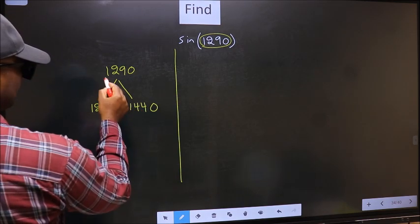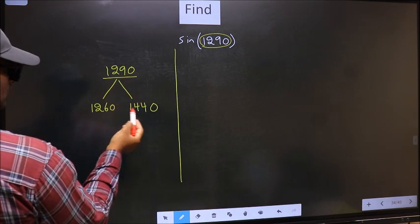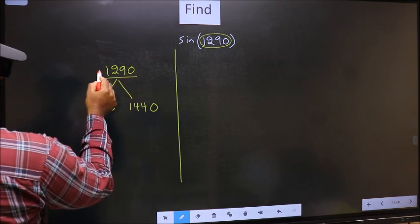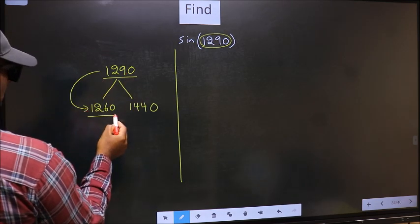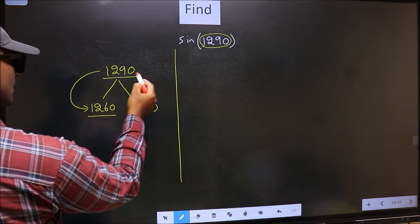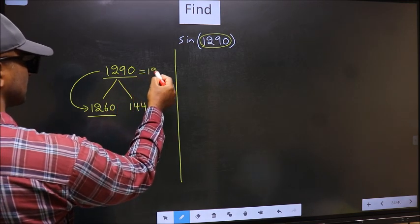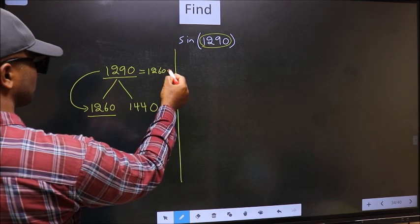Next. Now 1290 is close to which number? This is close to 1260. So 1290 now should be replaced by 1260 plus 30.